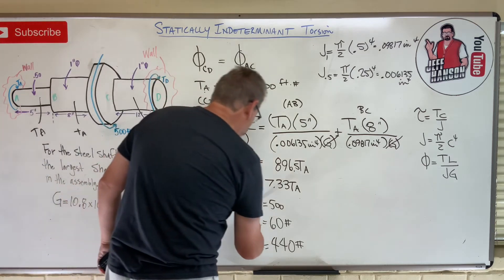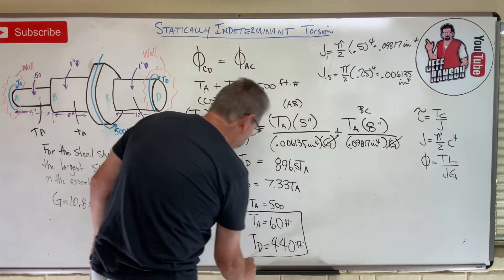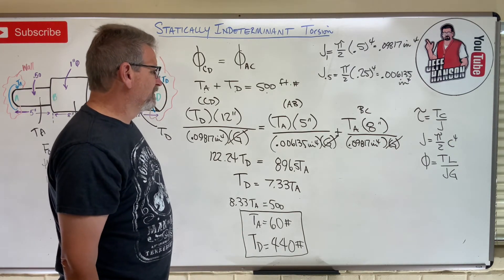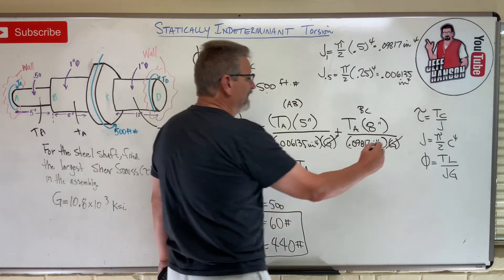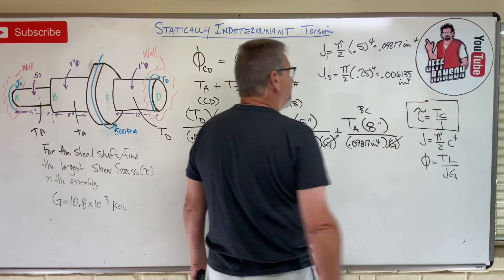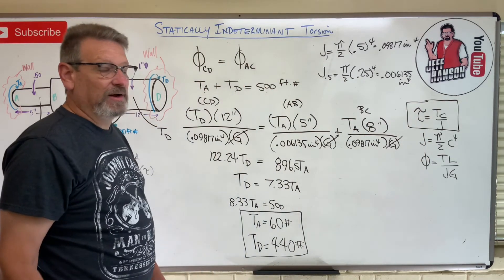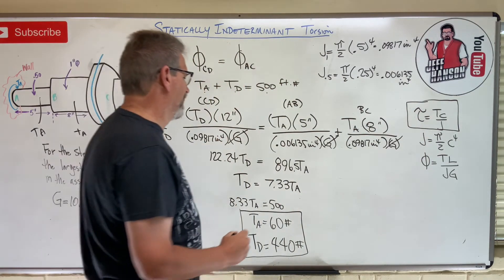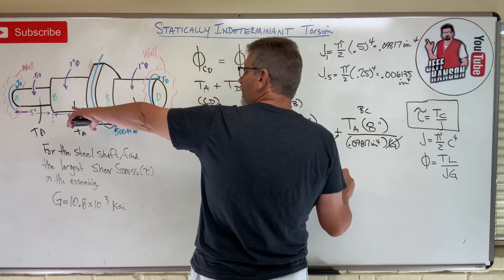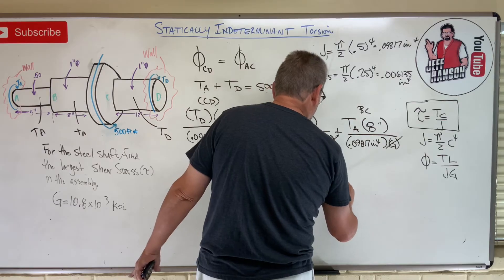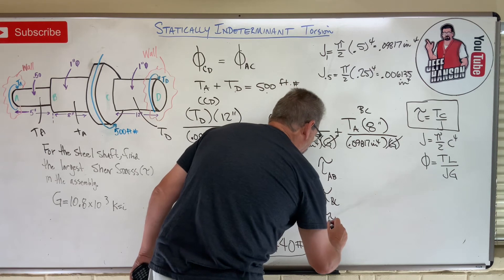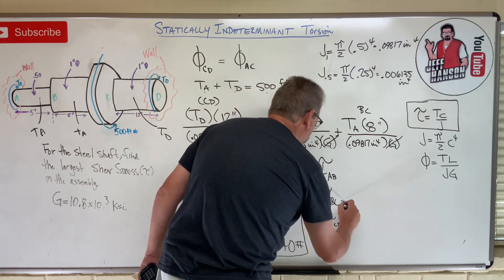Now we have the torques in each section. We still need to find the shear stresses. We have three sections to check: tau_AB, tau_BC, and tau_CD. Let's calculate each one using tau = Tc/J.